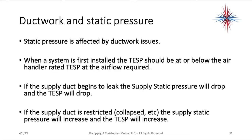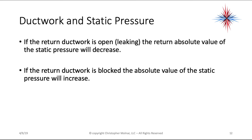Static pressure is affected by ductwork issues. When a system is first installed, the total external static pressure should be at or below the air handler rated total external static pressure for the required airflow. If the supply duct begins to leak, the supply static pressure will drop and the total external static pressure will drop as well. If the supply duct is restricted — such as a collapsed duct or too many registers closed — the supply static pressure will increase and so will the total external static pressure. If the return ductwork is open or leaking, the absolute value of the return static pressure will decrease. If the return ductwork is blocked, the absolute value of the return static pressure will increase, as it is trying to pull a harder suction.